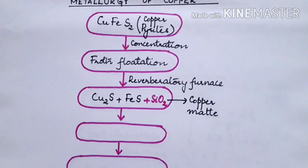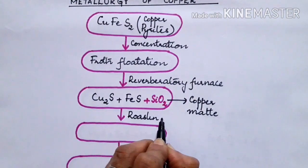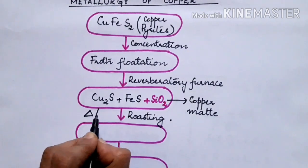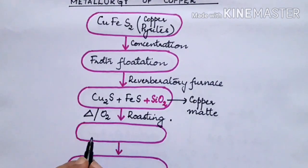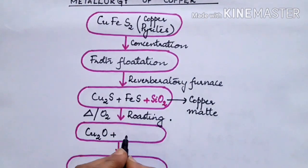This copper matte is subjected to what is called roasting in the next step. So in roasting, you find that heating is done in the presence of oxygen when copper sulphide will be converted to Cu2O and iron sulphide will be converted to Fe2O3.